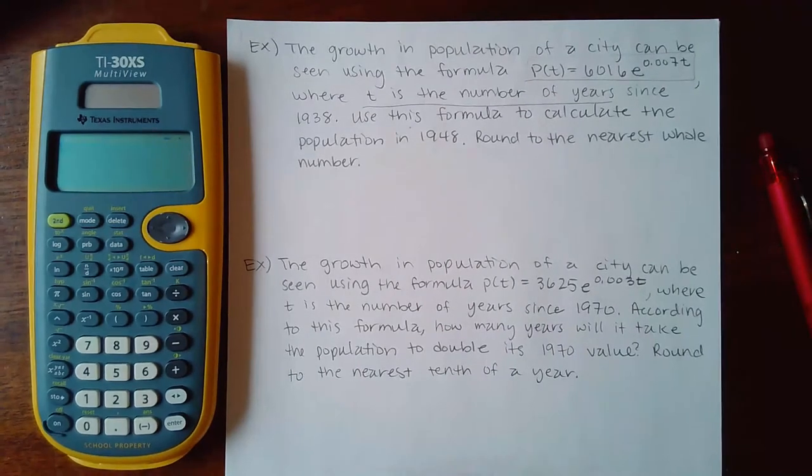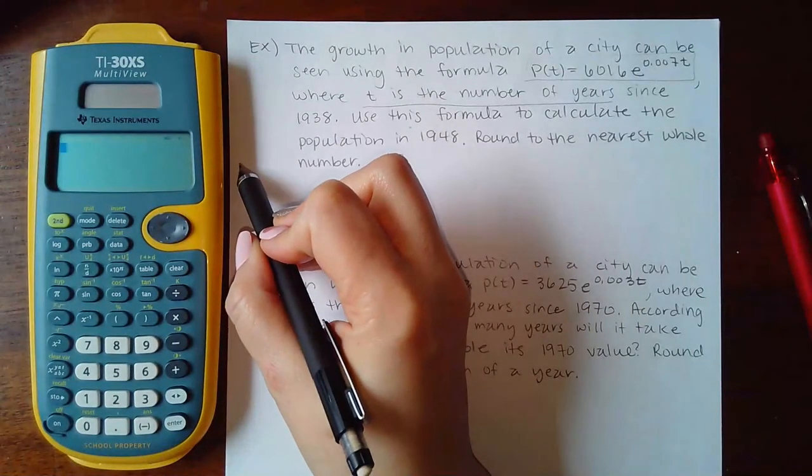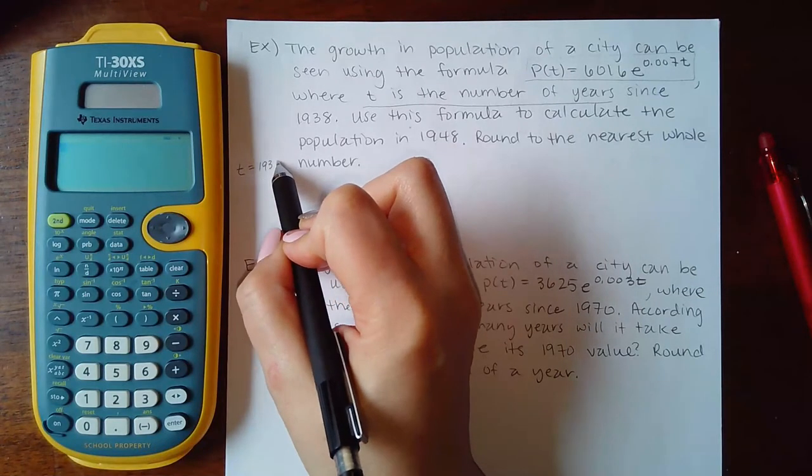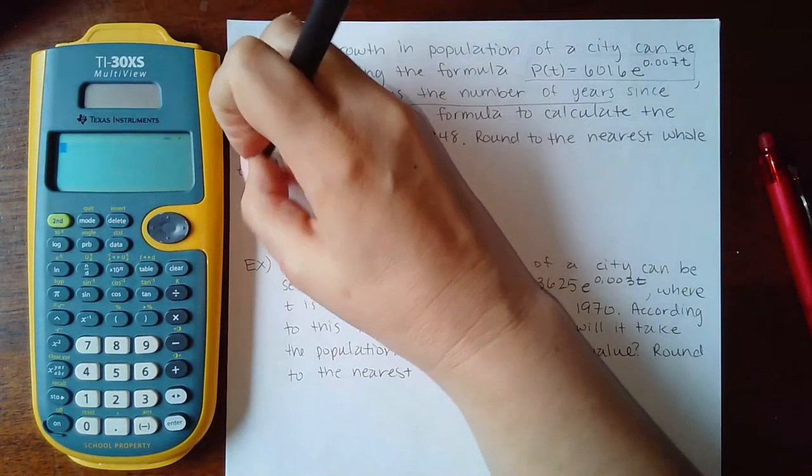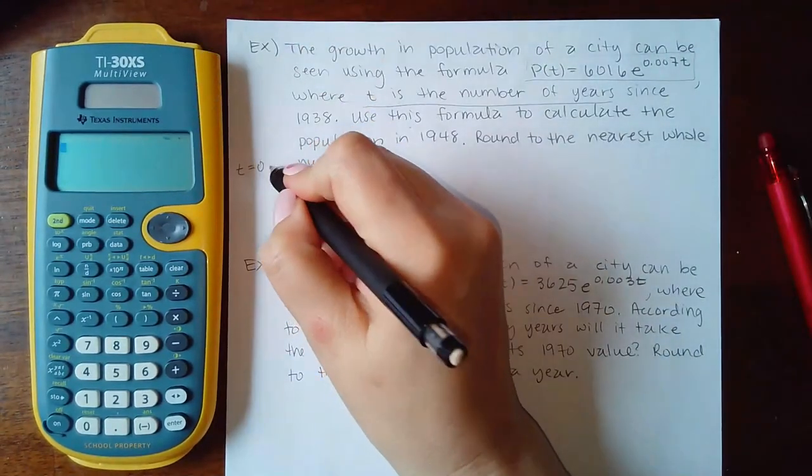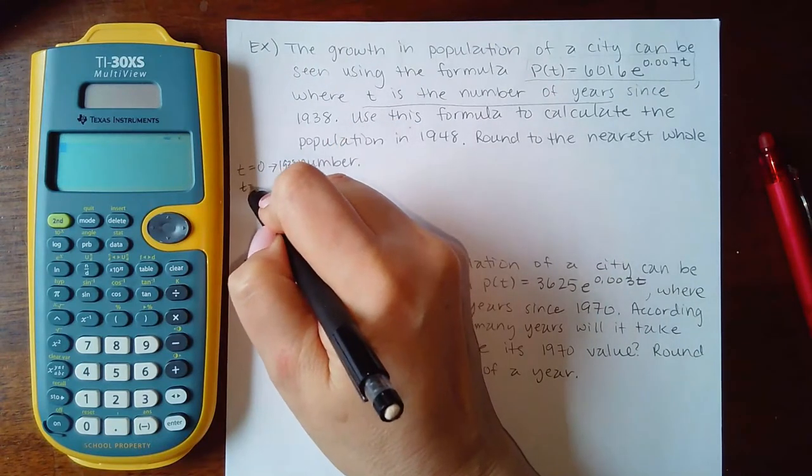Use this formula to calculate the population in 1948, round to the nearest whole number. So if t equals 1938, or actually what we should say is t equal to 0 corresponds to 1938.